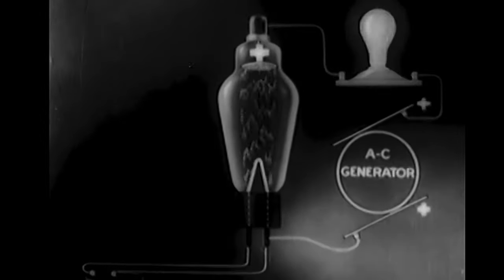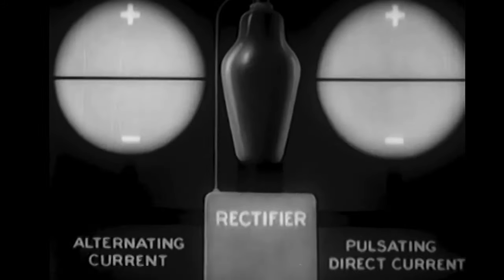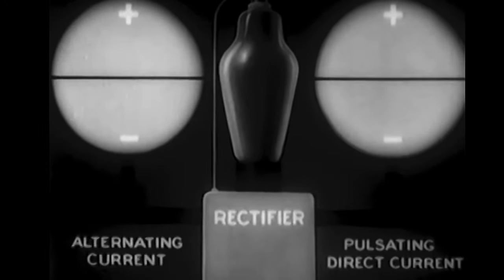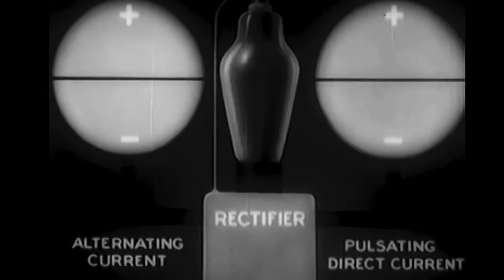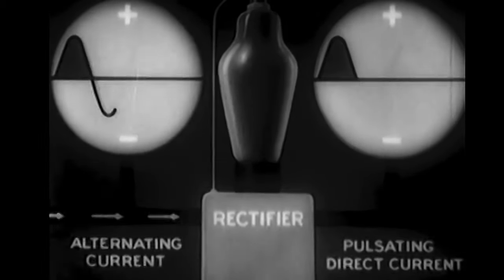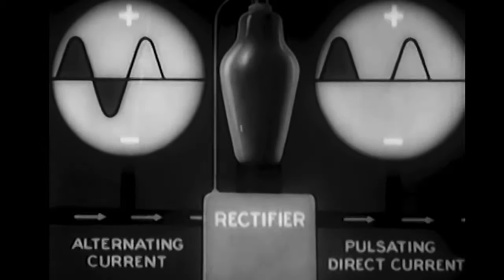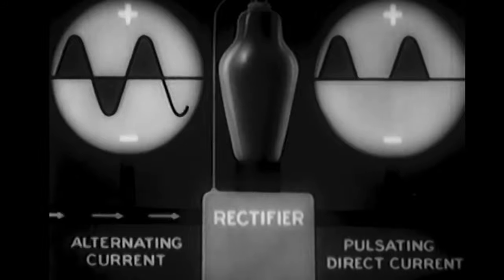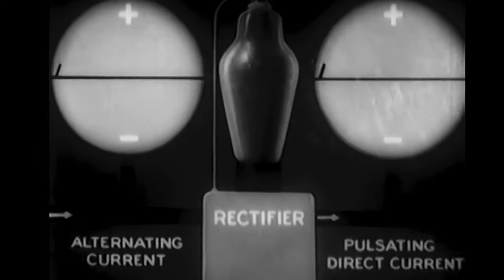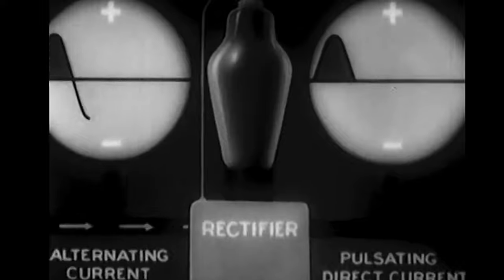We can visualize the result of the tube's rectifying action with the aid of these two oscilloscopes. The one on the left shows alternating current coming in; the one on the right shows pulsating direct current going out.